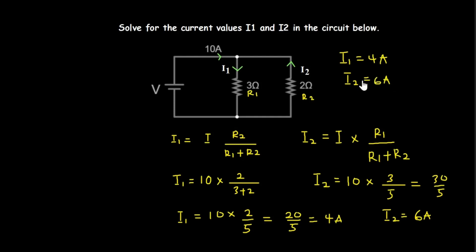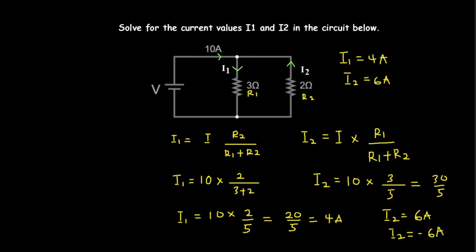However, looking at the circuit, i2 is moving in a direction opposite to the main current. The main current moves forward, but i2 moves backwards — opposite to the direction of the total current. Therefore i2 becomes negative, so instead of 6 amperes, i2 equals negative 6 amperes.